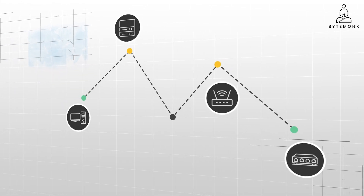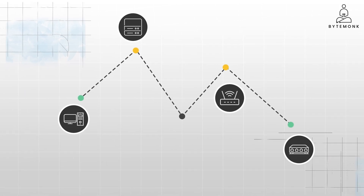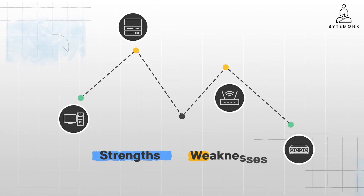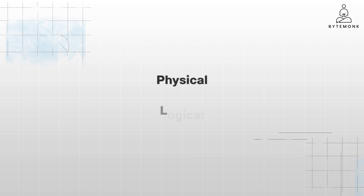First, let's understand some basic topologies, each with its strengths and weaknesses. A network topology has two distinct aspects: physical and logical.